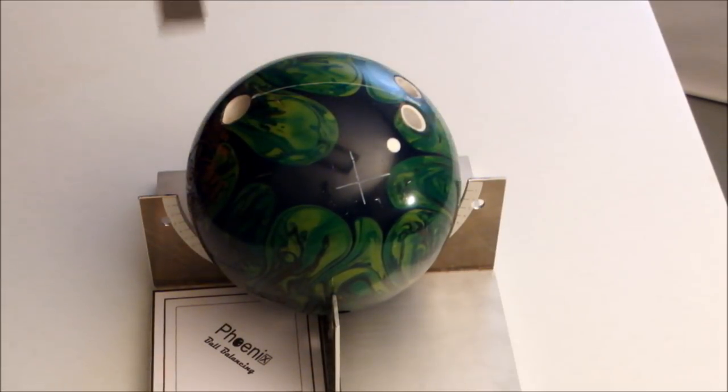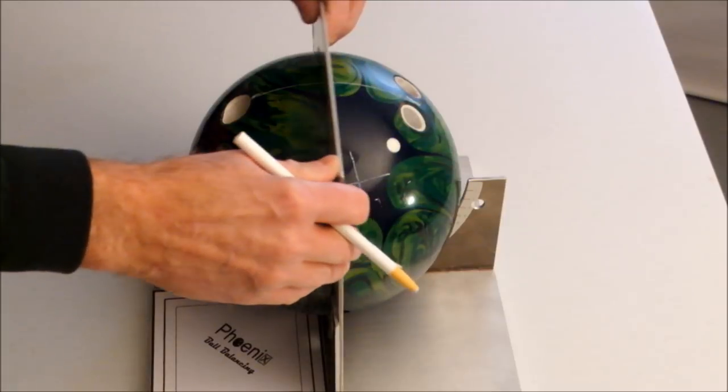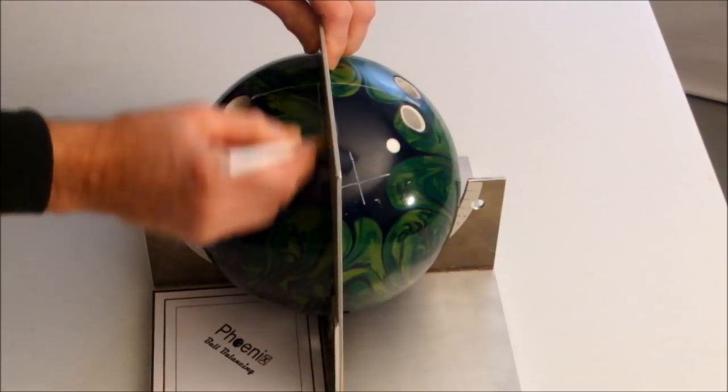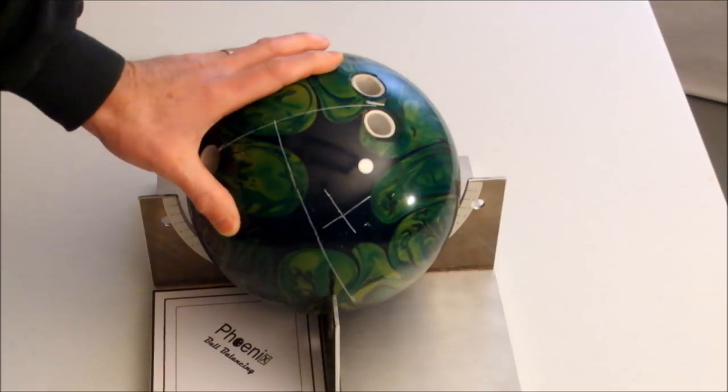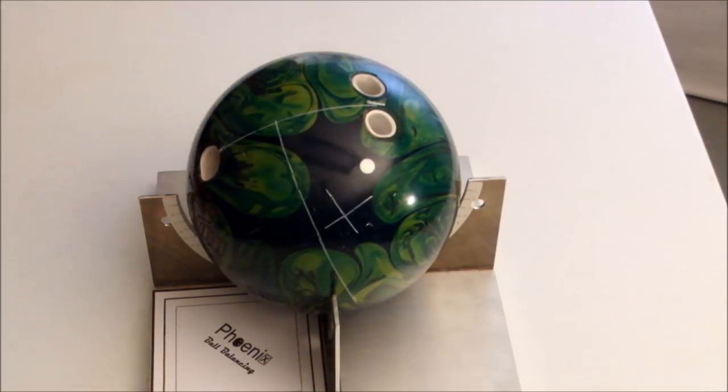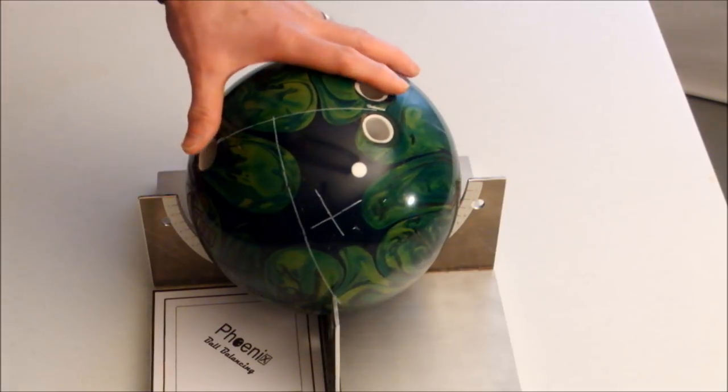We'll mark the center line and the mid line. We need to know the horizontal and vertical distances from the center grip to the PAP.